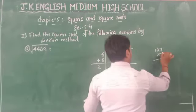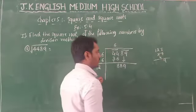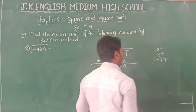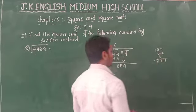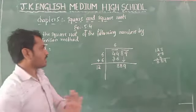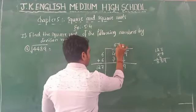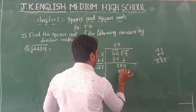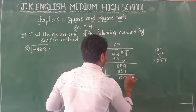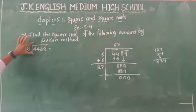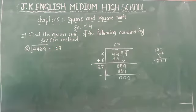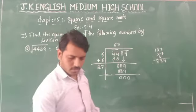Confirming: 7+7=14, and 12+7 gives us the full divisor 127. 127×7=889, and 889 minus 889 equals 0. Since the remainder is 0, the square root of 4489 is 67.